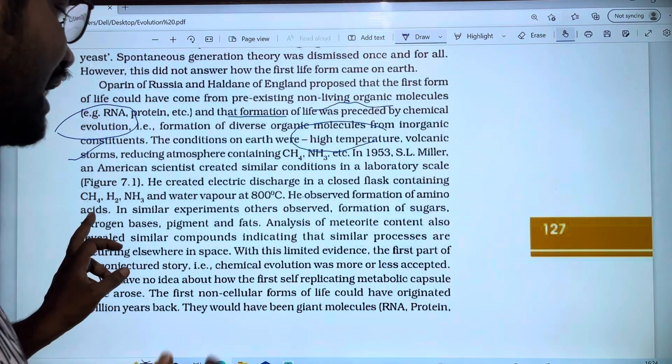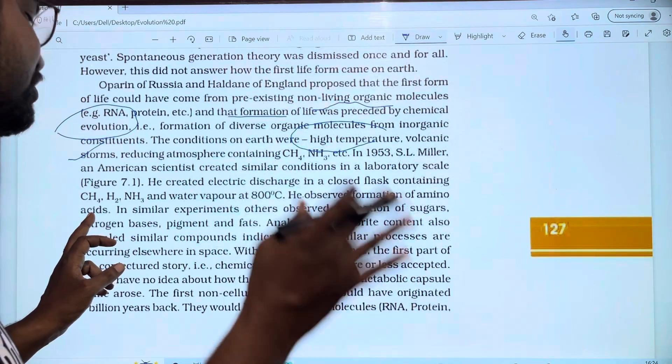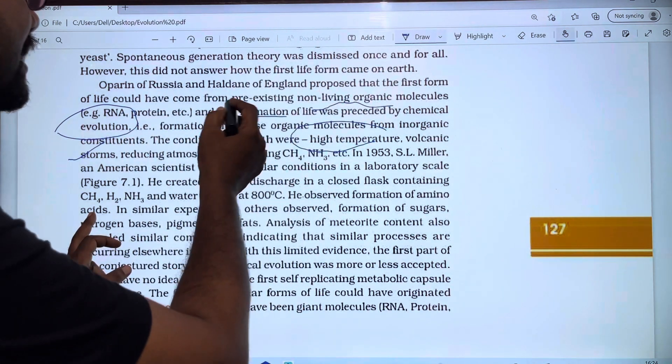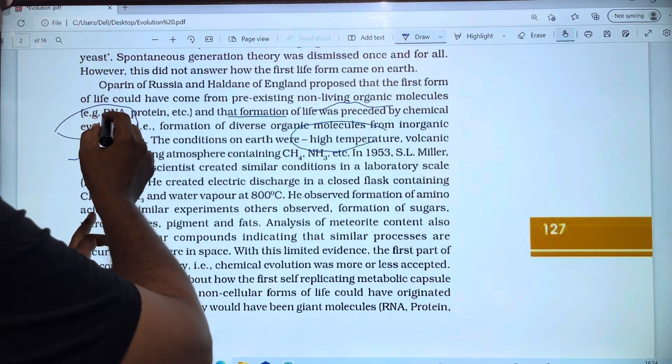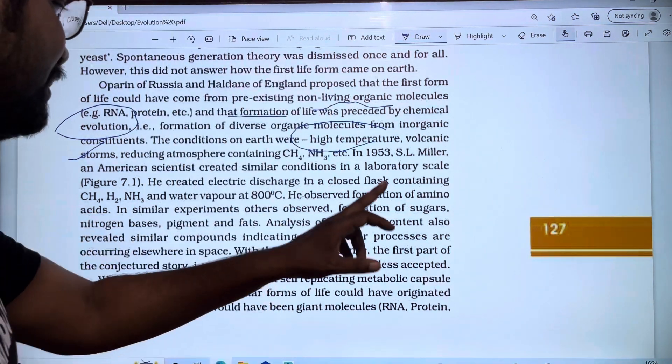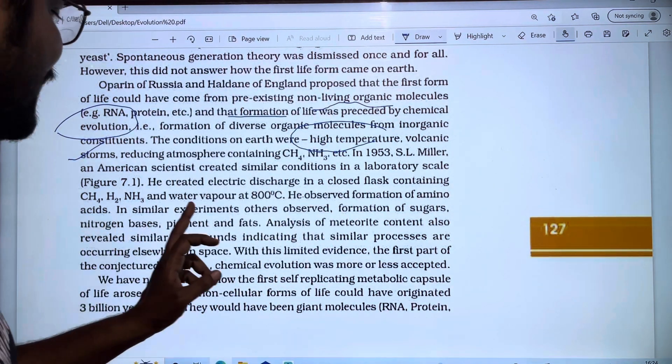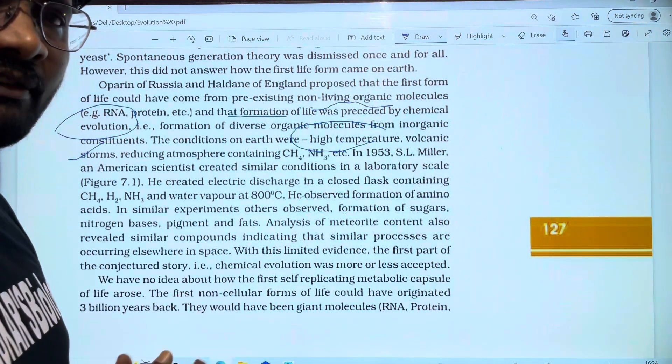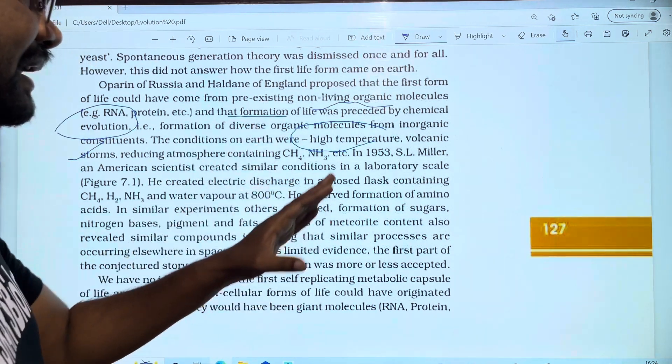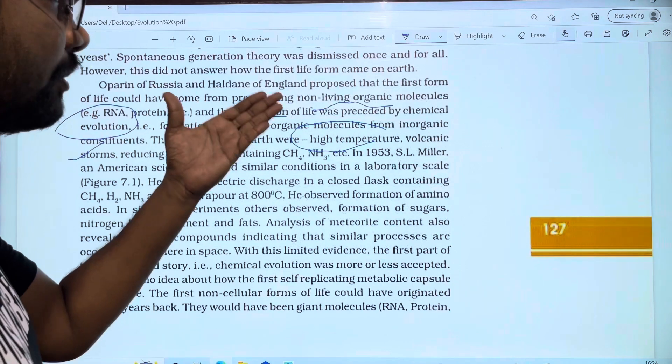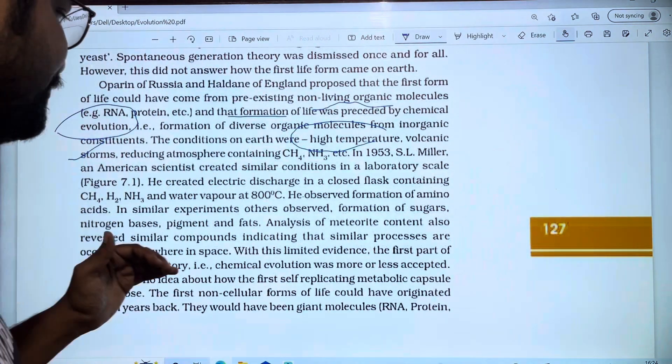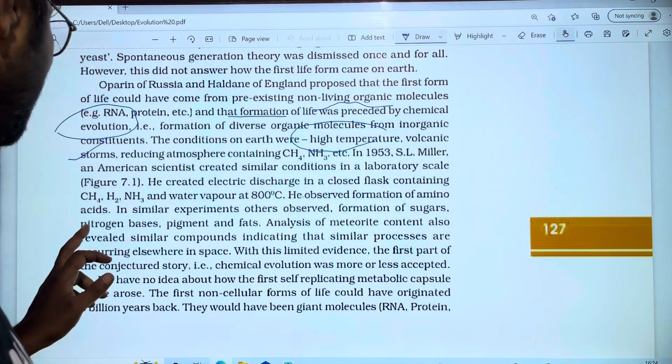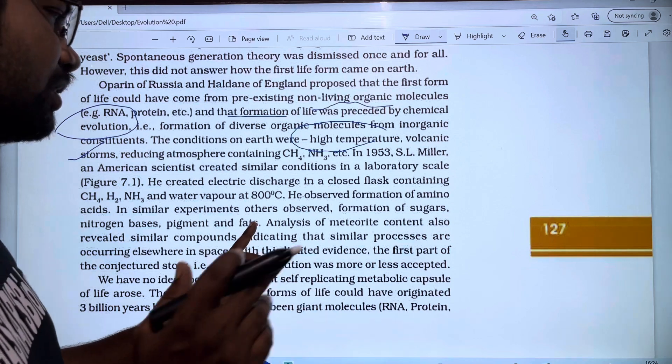He observed the formation of amino acids. From these amino acids, proteins can form, and also RNA. If we have pre-existing non-living organic molecules, we can form RNA and proteins. Similar experiments by others also observed formation of amino acids, sugars, nitrogen bases, pigments, and fats.